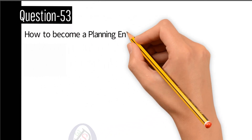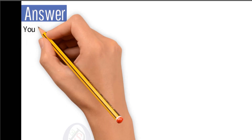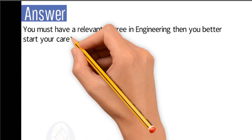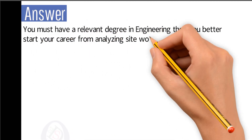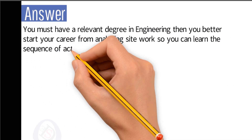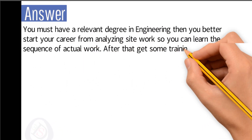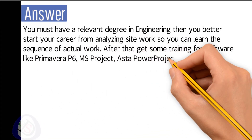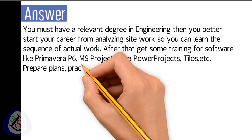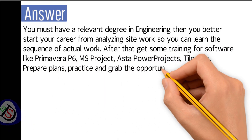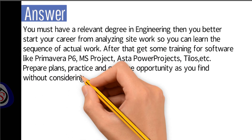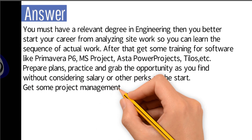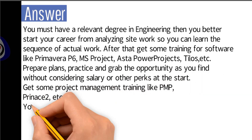Question number 53: how do you become a planning engineer? Answer: you must have a relevant degree in engineering. Then you should start your career by analyzing site work so you can learn the sequence of actual work. After that, get some training in software like Primavera P6, Microsoft Project, Asta, Power Projects, Tilos, etc. Prepare plans, practice, and grab opportunities as you find them, without considering salary or other perks at the start.